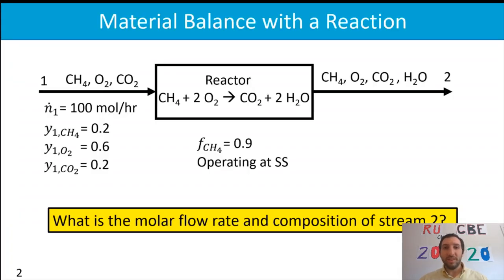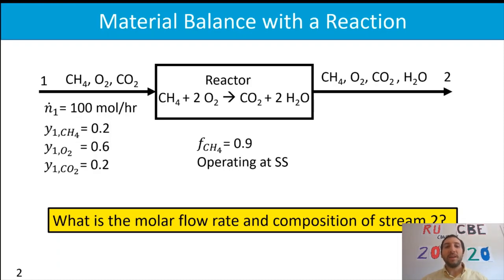In this part we've got methane, oxygen, and carbon dioxide entering our system. Methane is being combusted, and exiting the system we have methane, oxygen, carbon dioxide, and water. We have a fractional conversion of 90%, we're operating at steady state, and we're trying to figure out the molar flow rate of stream two as well as its composition.